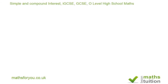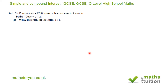The first question says Mr. Pereira shares $200 between his two sons in the ratio Pedro to Jose of 3 to 2. It asks us to write this ratio in the form n to 1. To get 1, I divide 2 by 2. And because I divide 2, I must also divide 3, so I do 3 over 2 to 2 over 2, giving a ratio of 1.5 to 1, or 1 and a half to 1.